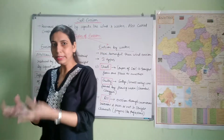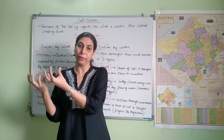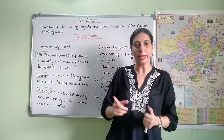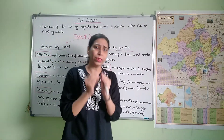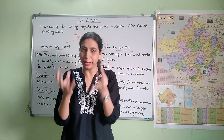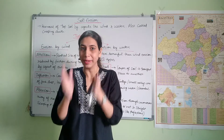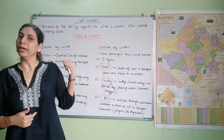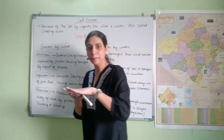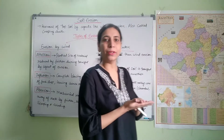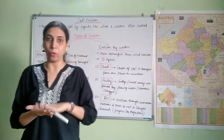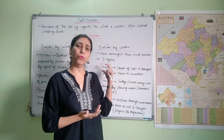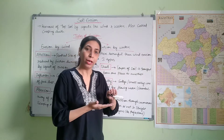So erosion is when the rock particles are carried away by wind and water — the agents of gradation — from one place to another. And weathering is when the rock disintegrates at the same place and the rock particles remain there, not transported somewhere else. Now, soil erosion: in soil erosion, the top layer of the soil — the upper layer — is transported by agents of gradation like wind and water. In the context of Rajasthan and deserts, wind and water are the main agents.